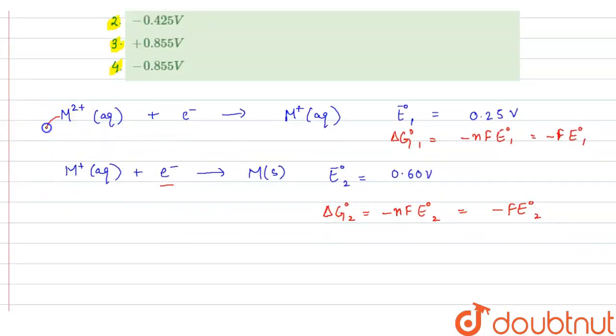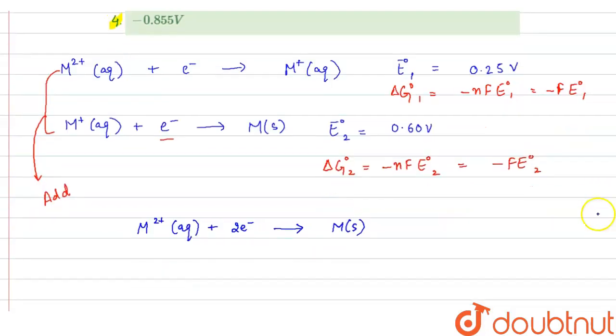Now when we add these two equations, what we get? We get here M²⁺(aq) + 2e⁻ gives M(s). Right, and for this reaction, electrode potential would be E⁰₃ and this we have to calculate.